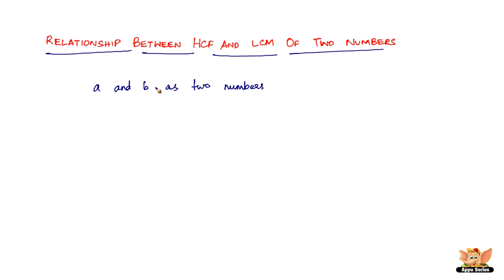If a and b are two numbers and we've got the HCF and LCM of both these numbers, then the product of the numbers equals the product of their HCF and their LCM. So that is the relationship between the HCF and LCM.